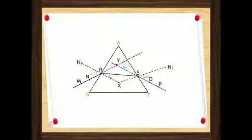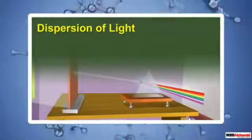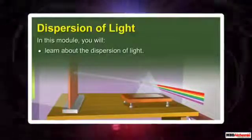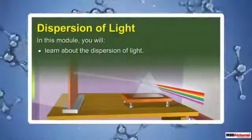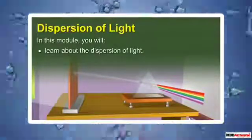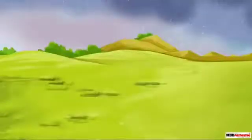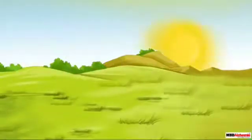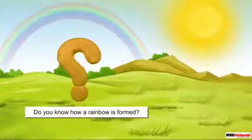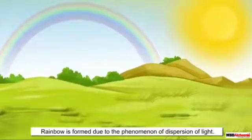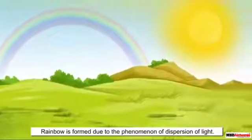Now let us study the next topic: dispersion of light. After rainfall, we can see a rainbow in the sky. Have you wondered how this rainbow is formed? Rainbow is formed due to the phenomenon of dispersion of light — the same phenomenon that occurs when light passes through a prism.